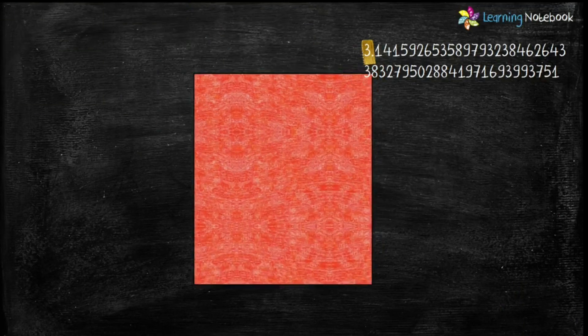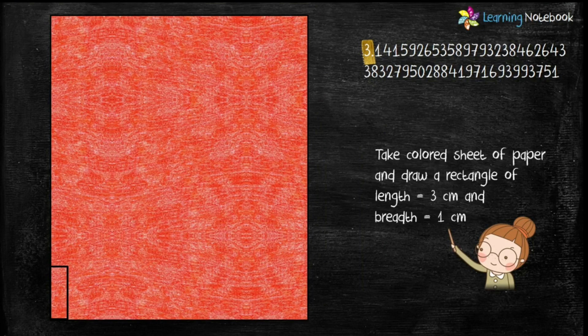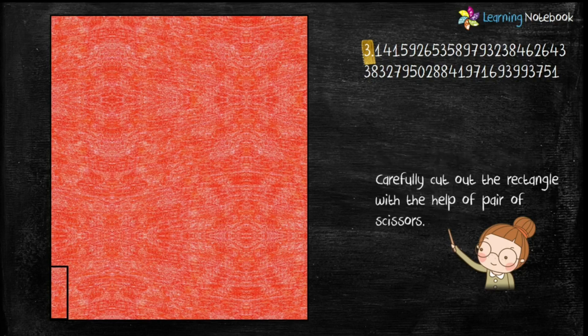Now let's start the activity. The first number in the value of pi is 3, so take a colored sheet of paper and draw a rectangle of length equals to 3 centimeters and breadth equals to 1 centimeter. Then carefully cut out this rectangle using a pair of scissors.